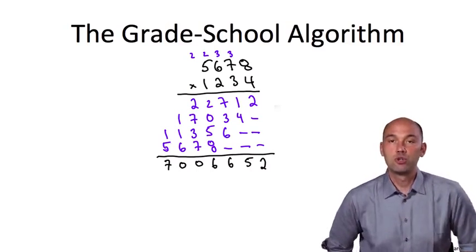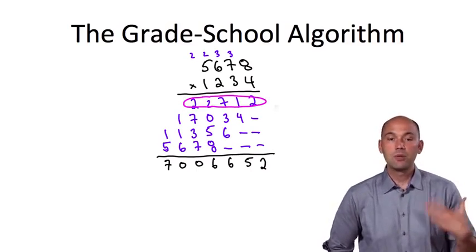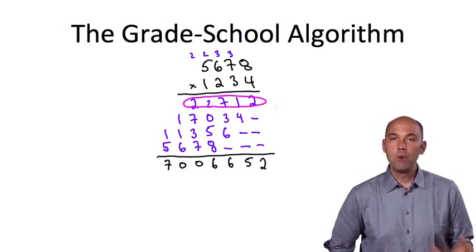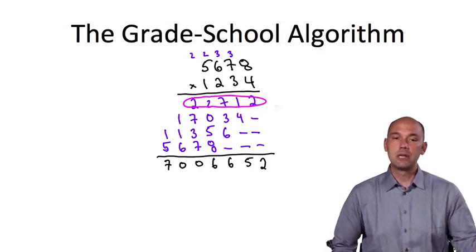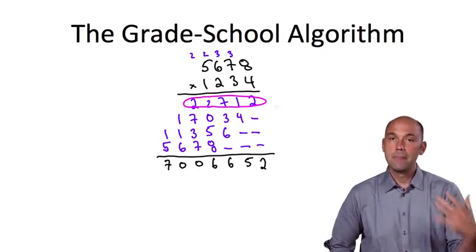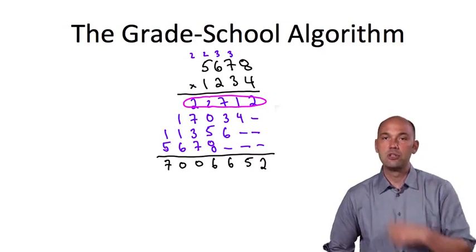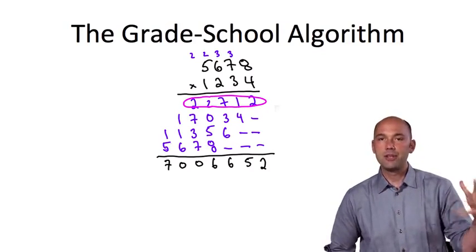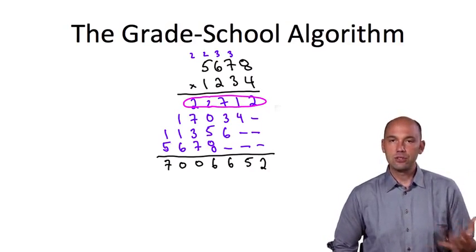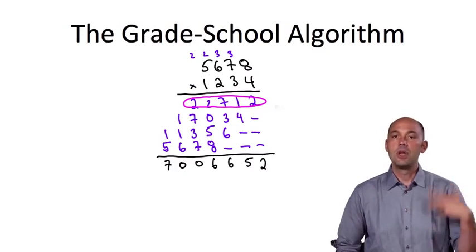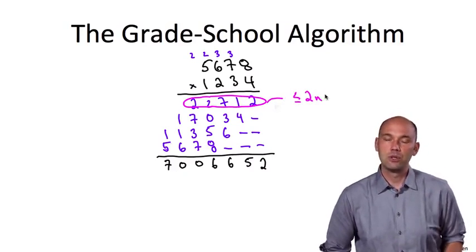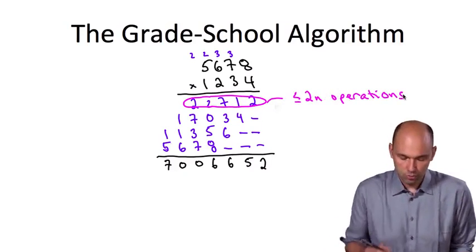Let's begin with the first partial product, the top row. How did we compute this number 22,712? Well, we multiplied 4 times each of the numbers 5, 6, 7, and 8. So that was 4 basic operations, one for each digit of the top number, plus we had to do these carries. So those were some extra additions. But in any case, this is at most twice times the number of digits in the first number, at most 2n basic operations to form this first partial product.